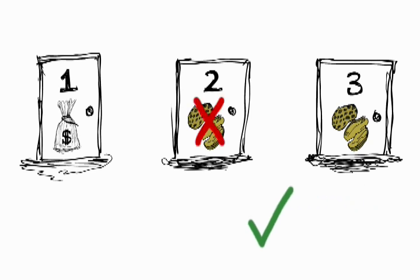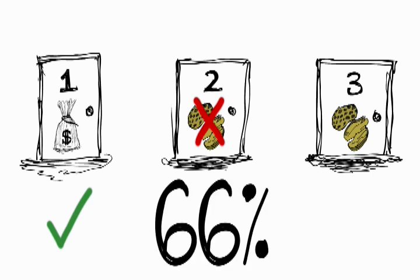Which means by switching, you will always win the bag of cash. And the chance that you picked a peanut door the first time is 66% of the time.